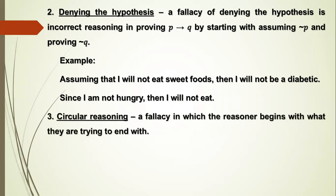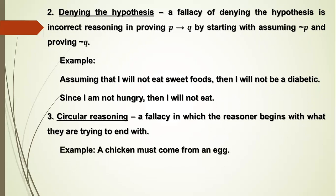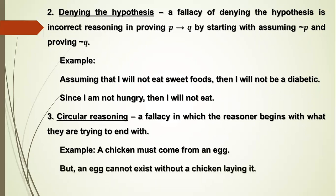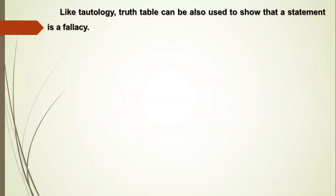Number 3, Circular Reasoning — a fallacy in which the reasoner begins with what they are trying to end with. Example: A chicken must come from an egg, but an egg cannot exist without a chicken laying it, but a chicken must come from an egg. Like tautology, a truth table can also be used to show that a statement is a fallacy.